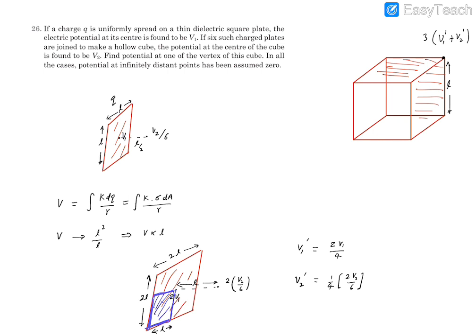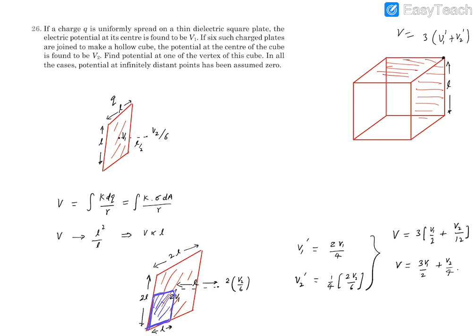Now we can find the total potential V at the corner of the cube: V = 3V1' + 3V2' = 3(V1/2) + 3(V2/12) = 3V1/2 + V2/4. So the final potential at the vertex of the cube is 3V1/2 + V2/4. That is our final answer.